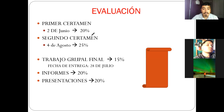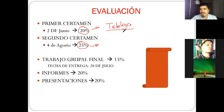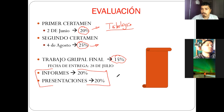Aquí están las fechas de los certámenes. El primer certamen tiene un 20%, y el segundo certamen un 25%. En el primer certamen va a entrar tribología: todo el tema de desgaste, lubricación y fricción. En el segundo entra más análisis de falla y la parte de mantenimiento. Un trabajo grupal de 15%, y esos informes y presentaciones son los que se van a ir desarrollando los días lunes.